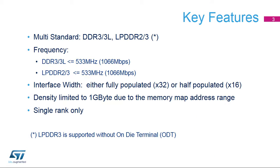The key features of the DDR subsystem include support for multiple DDR standards: DDR3, DDR3L, LPDDR2, and LPDDR3. For all standards, the maximum frequency is 533 MHz, DDR at 1066 Mbps. Note that LPDDR3 is supported without on-die termination, or ODT, similar to LPDDR2 support.